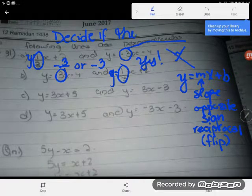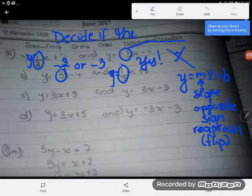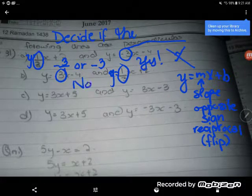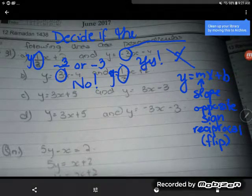So there we go. We have our 3. We have our one-third. So one thing you're going to notice is they are reciprocals. One-third is a flip. It's like I flipped the fraction upside down on its head. However, you're going to notice they don't have opposite signs. And both need to be true. So these two lines are not perpendicular.